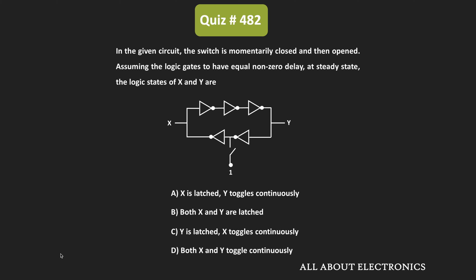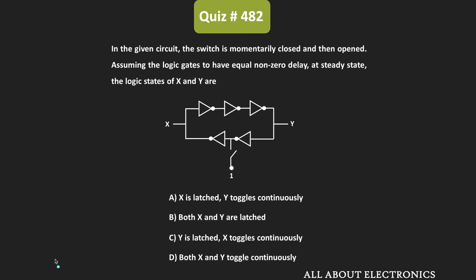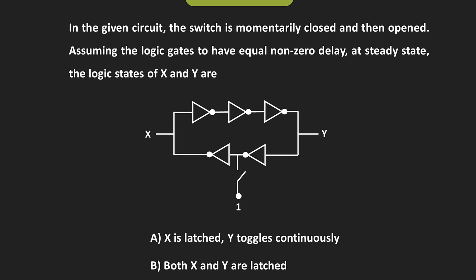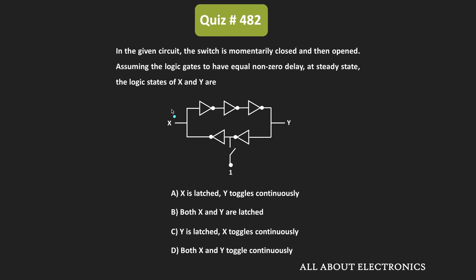Now let us see the second question. This question is also related to the propagation delay of logic gates. We have been given this logic circuit where the switch was momentarily closed and then once again opened. In the steady state condition, we have been asked to find the logic states of X and Y. All the logic gates have equal and non-zero delay — all five NAND gates have equal delay.